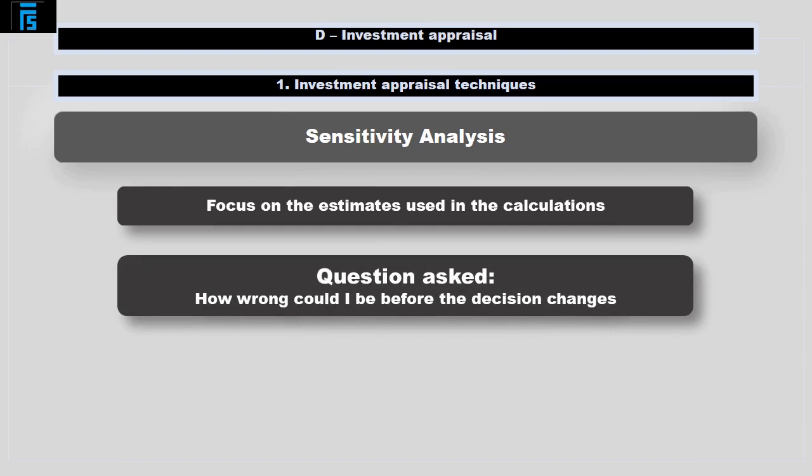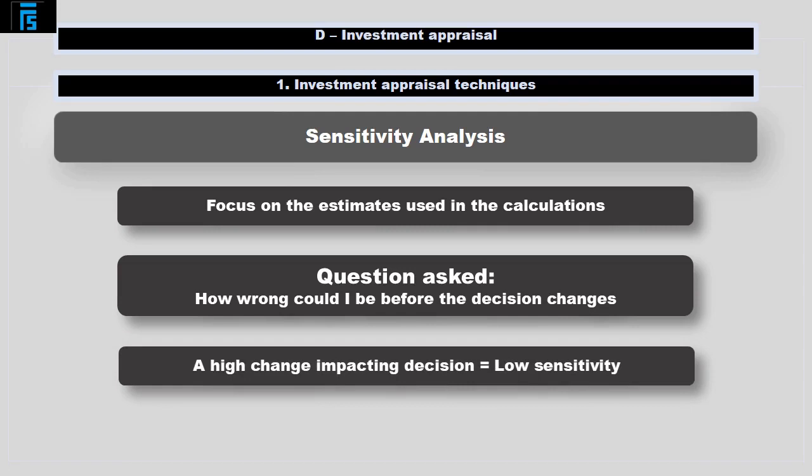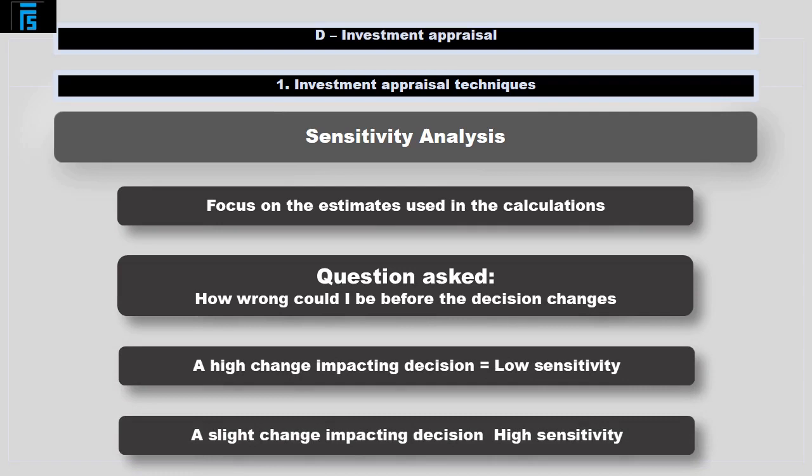In other words, how much different from that estimate will the number need to be before it turns out that I made a mistake in my initial conclusion? If the answer is it has to be very different, I am probably feeling reasonably comfortable. If it only has to be slightly different before the decision changes, I am very sensitive to that variable.